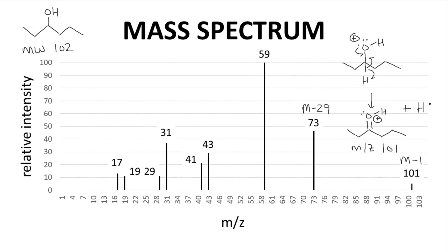The same mechanism again could break off a propyl group. That would give an M minus 43 cation, which we see at m/z 59.